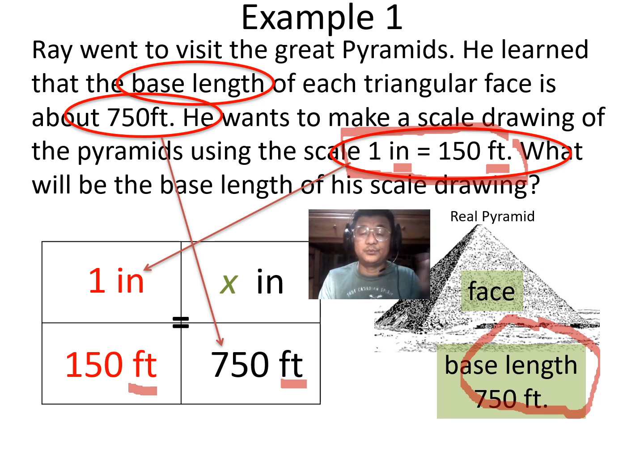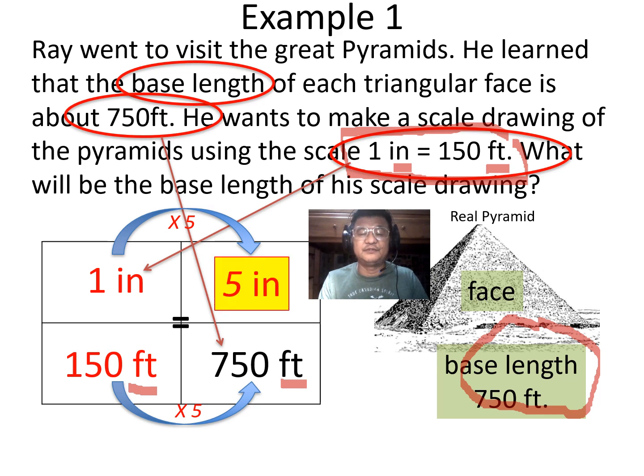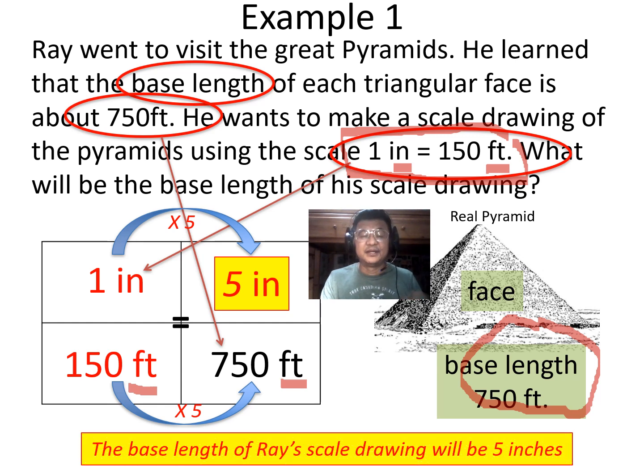So, again, what did we learn before? I can either look for a pattern and do cross multiply and divide. Obviously, the pattern here is times 5. Therefore, on top, it's also times 5. Therefore, 1 times 5 is 5. So in the drawing, it has to be 5 inches. The 5 inches represents the 750 feet in real life. The base length of Ray's scale drawing will be 5 inches.